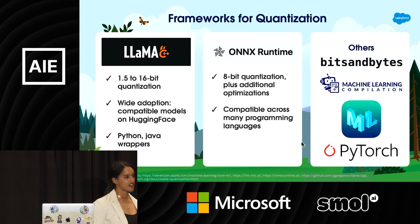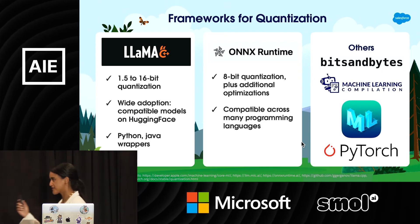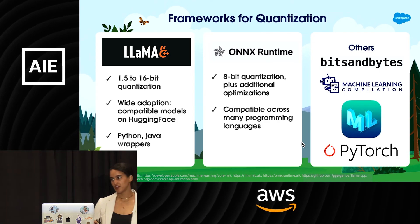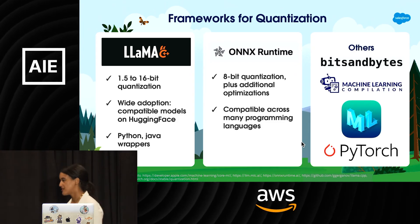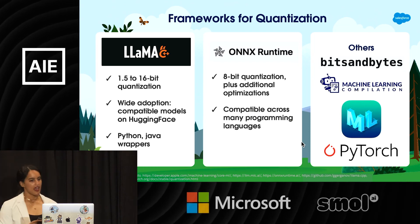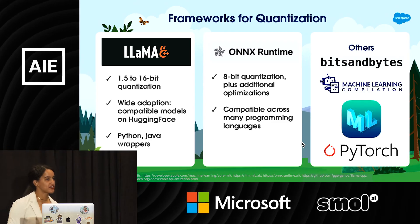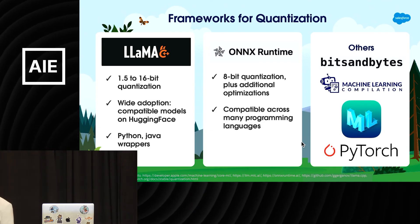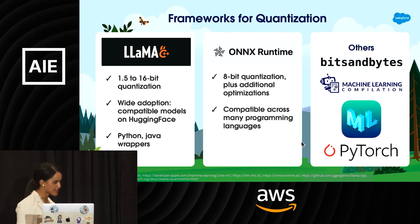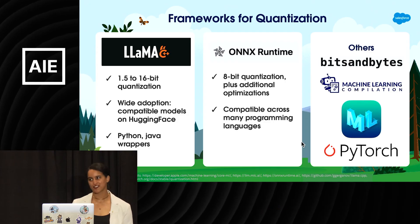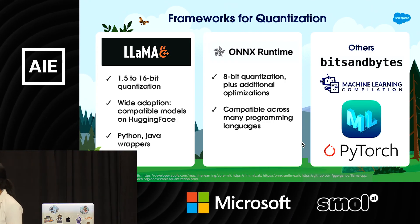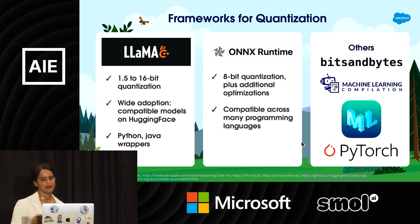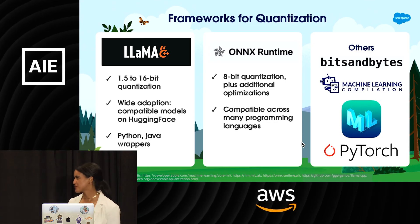To get started on this today, you can quantize any of your models — ML models, LLMs, multimodal models. A couple of great frameworks: LLAMA.cpp is one of the most well-known right now, gaining a lot of traction, with quantization from 16-bit all the way down to 1.5-bit. You may not even need to quantize models yourself — just check Hugging Face, as many model releases now include LLAMA.cpp compatible quantized versions. It also has Python and Java wrappers. Second, ONNX Runtime — it's been around since the ML days and has 8-bit quantization, with compatibility across many programming languages.